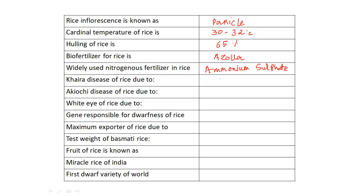Khaira disease of rice is due to the deficiency of zinc — zinc deficiency causes this disease. Akiochi disease of rice is due to H₂S toxicity. White eye of rice is due to iron (Fe) deficiency.